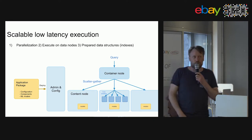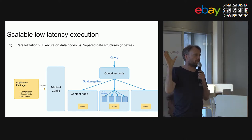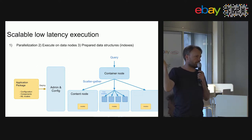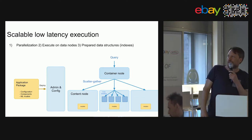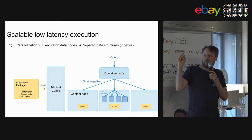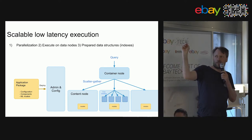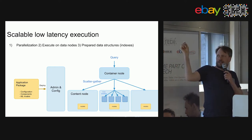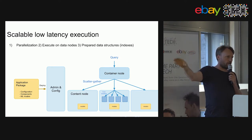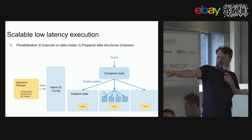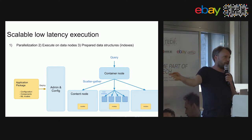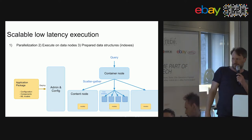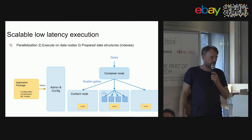The most important feature of Vespa is the ability to bound latency and computation regardless of the size of your data and the complexity of your machine-learned models. One key mechanism is having multiple content nodes that store different shards of the data, and executing the query over all shards in parallel. On each node, each query is also executed across multiple cores simultaneously for different parts of the data space on that node.